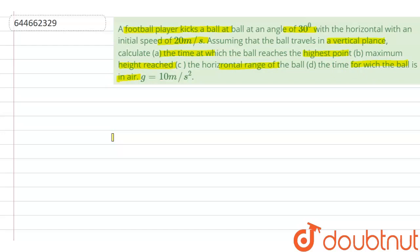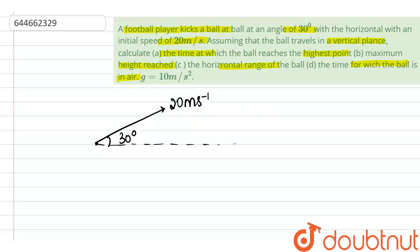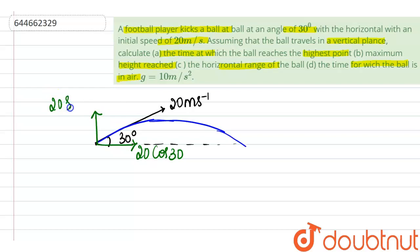To visualize the question: the football is kicked along a direction at an angle of 30 degrees with the horizontal, with an initial velocity of 20 meters per second. Since it is projected at an angle to the horizontal, the ball performs projectile motion. We can resolve the initial velocity vector into 20 cos 30 along the horizontal and 20 sin 30 perpendicular to it. The maximum height is H_max, and the range is from the origin to the landing point.